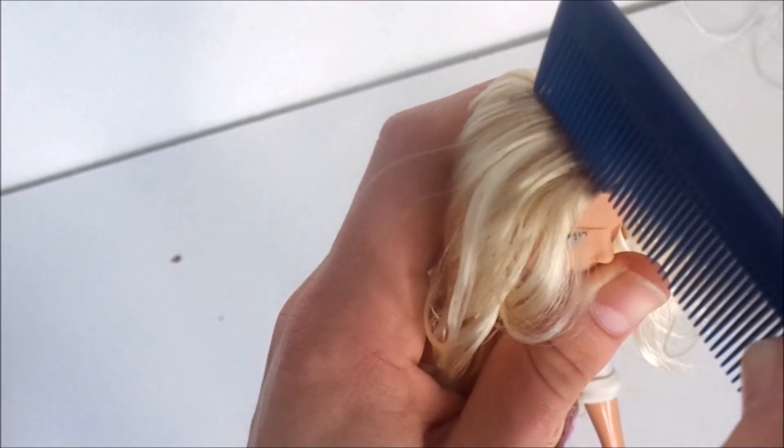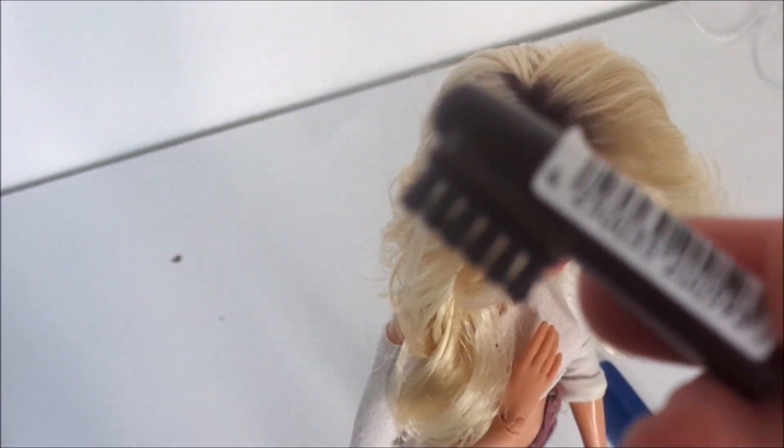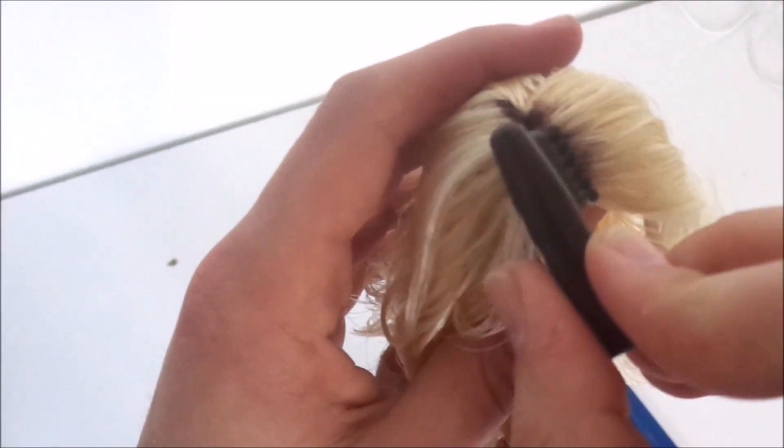So I take a comb and use that to shake out the roots which gives it a more natural look because you kind of set the powder in place. You can also use the little comb that is attached to the pencil but I prefer using my regular comb because that gets into the hair better.